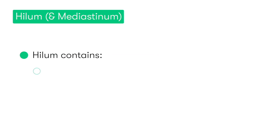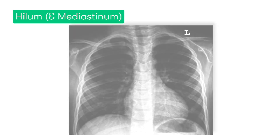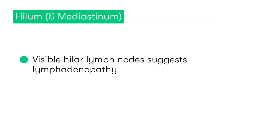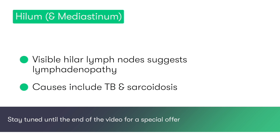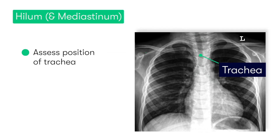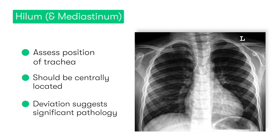Next up we have the hilum and the mediastinum. The right and left hilum are pretty complicated anatomical areas, because as well as containing the pulmonary vessels, they also contain the main bronchi and some lymph nodes. Normally we should be able to visualise the main bronchi and the pulmonary vessels. However, when we can easily identify the lymph nodes, that's usually indicative of lymphadenopathy — typically from an underlying condition such as TB or sarcoidosis. Moving on to the mediastinum, the key thing we want to check is the position of the trachea. As you can see in this case, the trachea is nicely positioned centrally, as it should be. However, it may become deviated in the presence of a tension pneumothorax, or from the mass effect of a large pulmonary pathology.